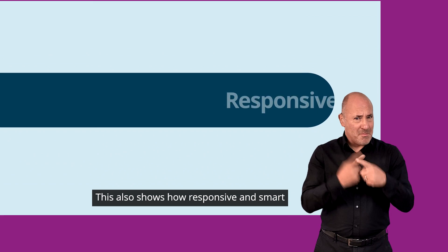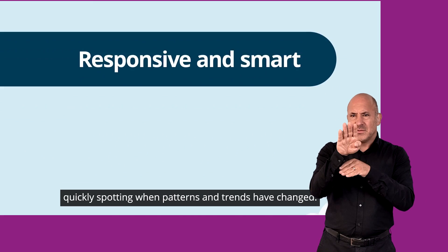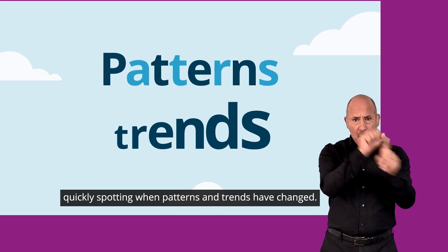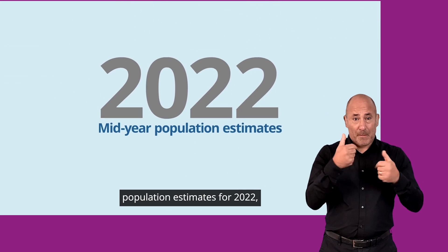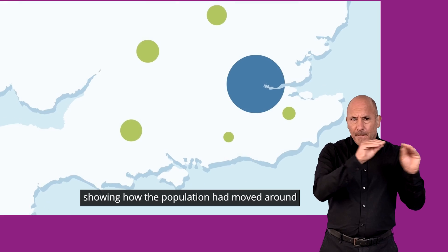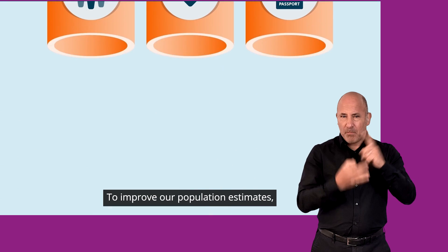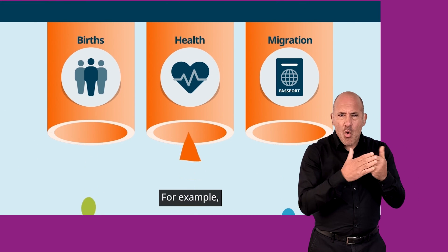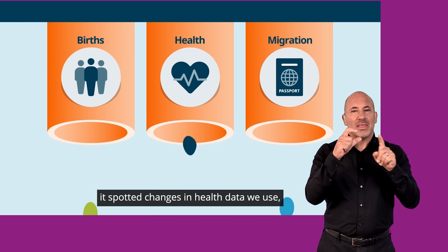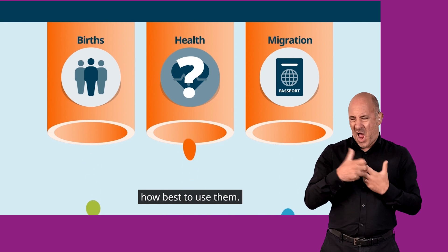This also shows how responsive and smart the DPM can be, quickly spotting when patterns and trends have changed, as it did with the mid-year population estimates for 2022, showing how the population had moved around after the coronavirus pandemic. To improve our population estimates, it can also tell when data are incomplete. For example, it spotted changes in health data we use, which meant that we could decide how best to use them.